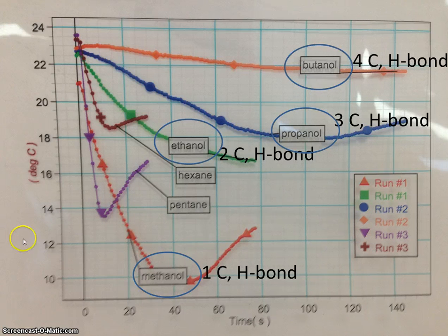We also have two straight chain alkanes, pentane and hexane. Pentane's got five carbons and hexane has six carbons. Now you know that the steeper the slope, the weaker the intermolecular force.